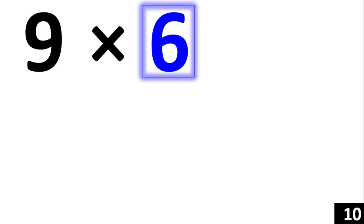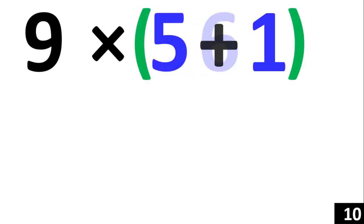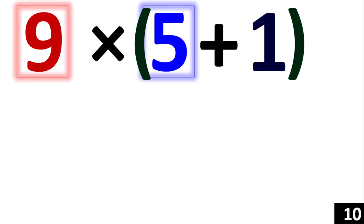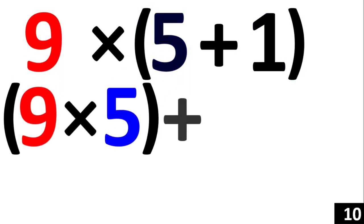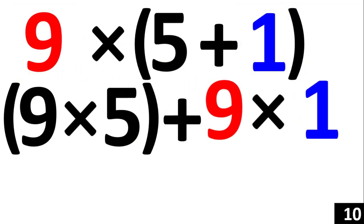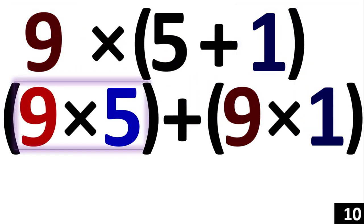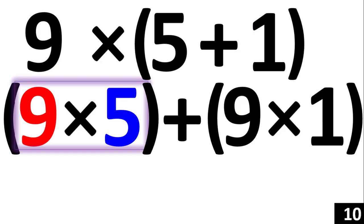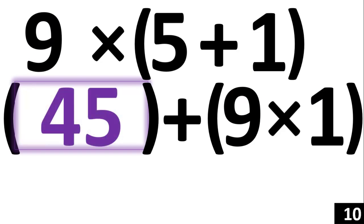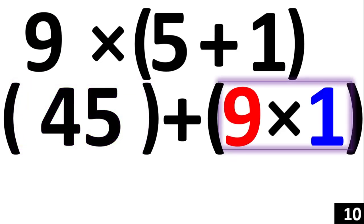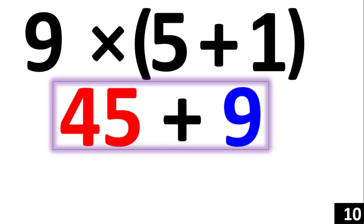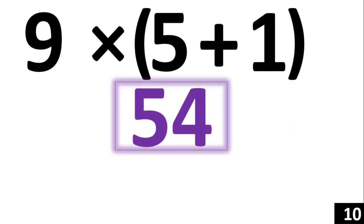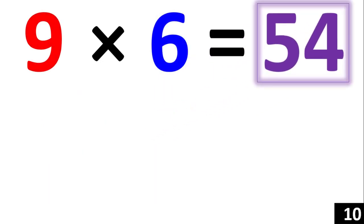9 times 6 is the same thing as 9 times 5 plus 1. Using the distributive property, we now have 9 times 5 plus 9 times 1. 9 times 5 is equal to 45, and 9 times 1 is equal to 9. Adding them together, 45 plus 9 is equal to 54. Therefore, 9 times 6 is equal to 54.